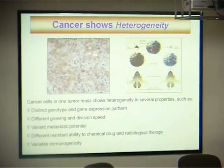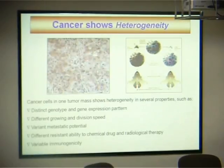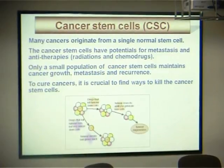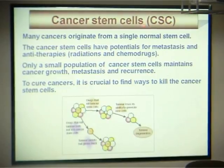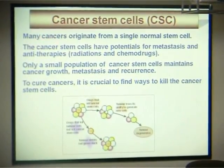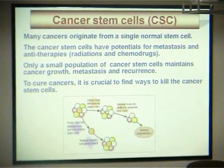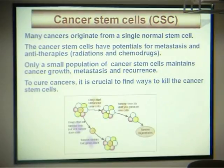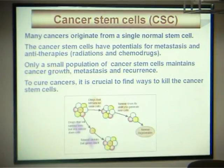Cancer shows heterogeneity. Within a cancer mass, the cancer cells have heterogeneity. Some cancer cells may be easily killed, but some cancer cells may not. A cancer stem cell (CSC) is the most attractive topic in recent years. Many cancers originate from a single normal stem cell. Cancer stem cells have potentials for metastasis and resistance to therapies including radiation and chemo drugs, but only a small population are cancer stem cells. Cancer growth, metastasis, recurrence, and MDR are driven by cancer stem cells.